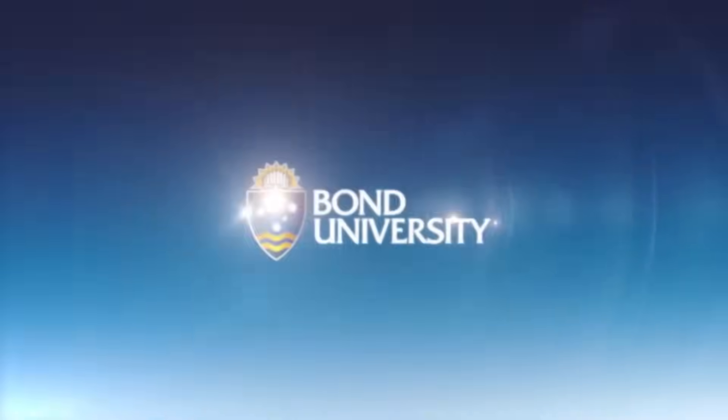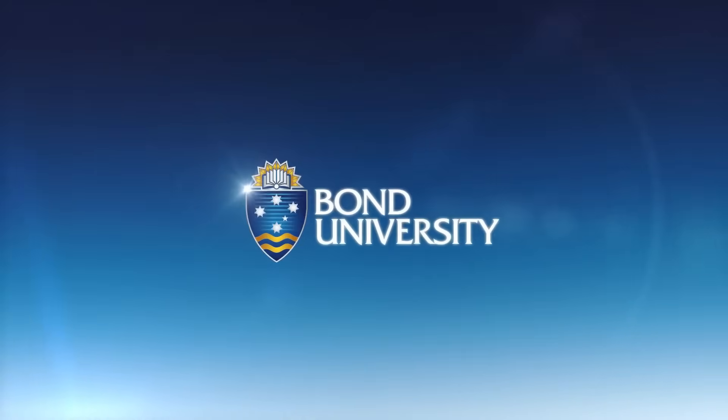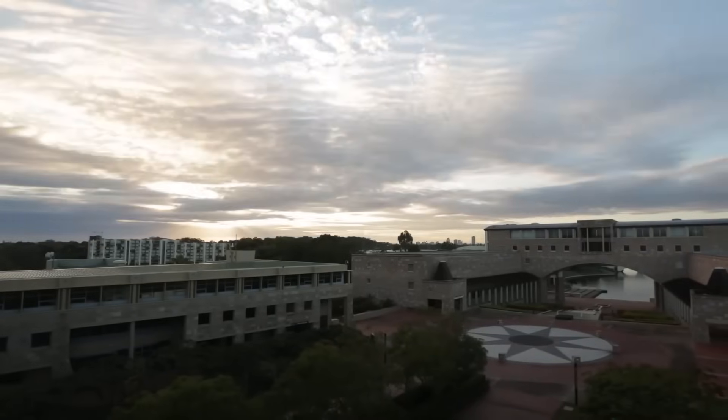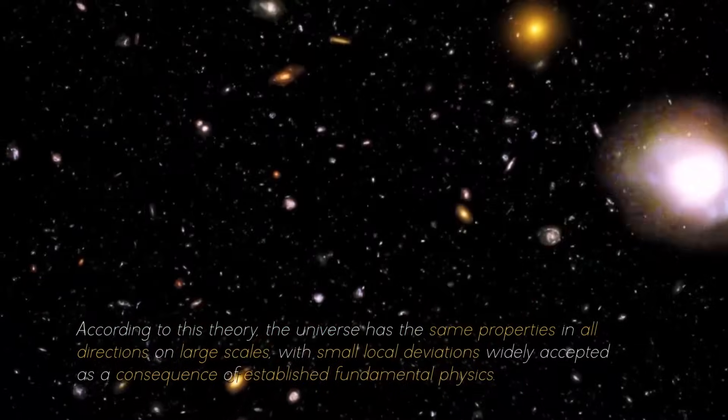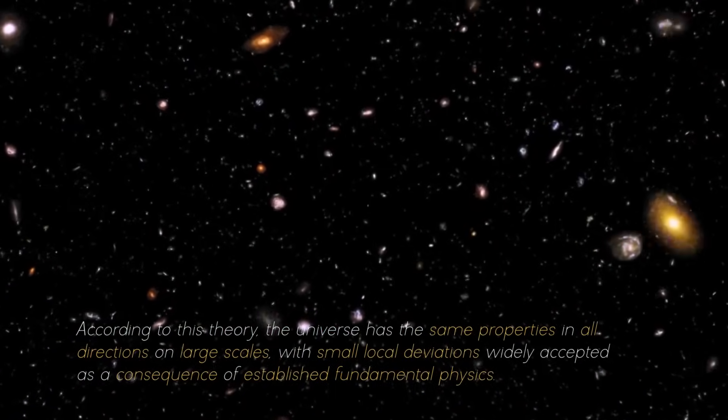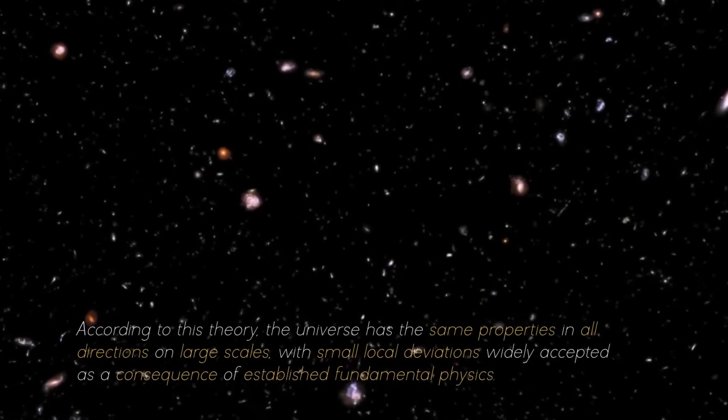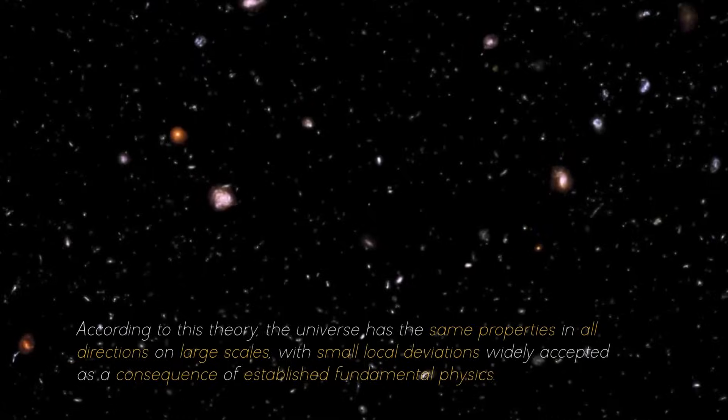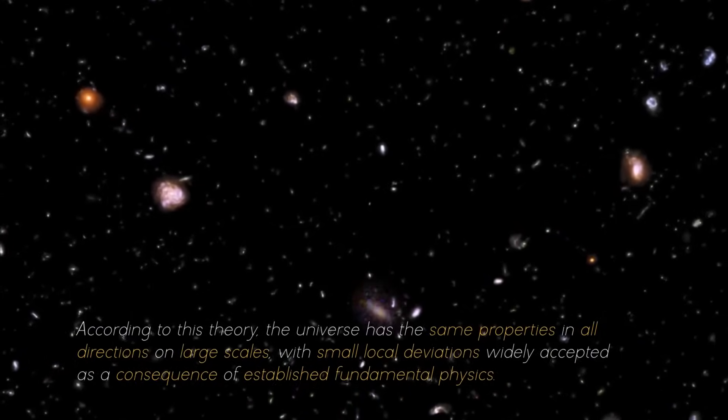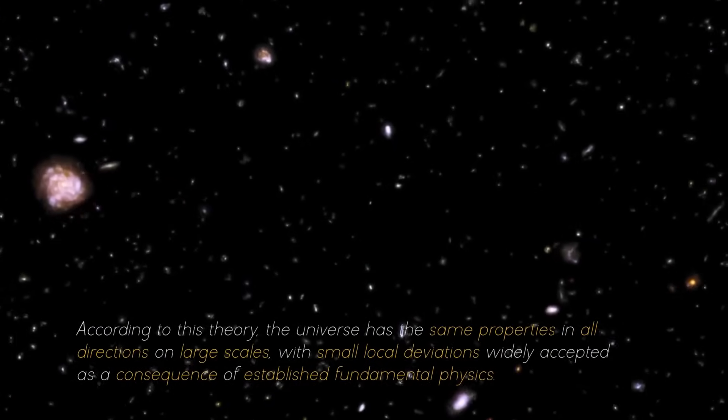A PhD researcher in astronomy and astrophysics at Bonn University, together with his supervisor, set out to investigate the theory of isotropy. According to this theory, the universe has the same properties in all directions on large scales, with small deviations widely accepted as a consequence of established fundamental physics.